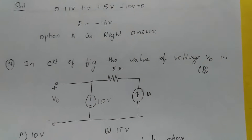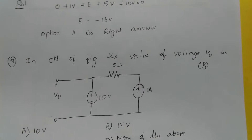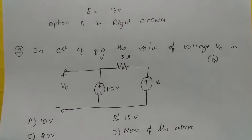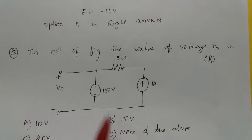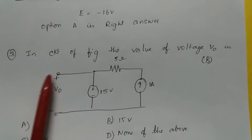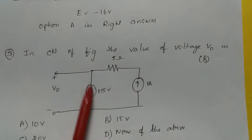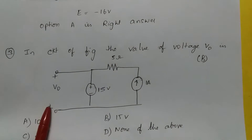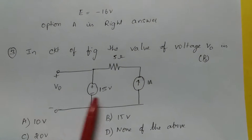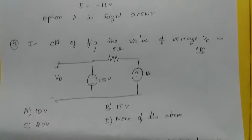In the circuit of the figure, the value of voltage V0 is to be found. This is a parallel network, so whatever value is on one side will be the same on the other side. Therefore V0 equals 15 volts.